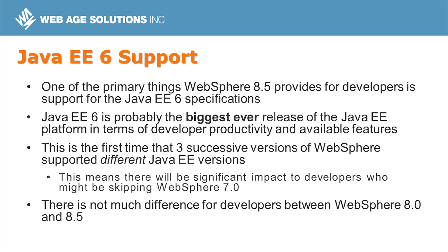This is the first time that three successive versions of WebSphere have supported different Java EE versions. WebSphere 6.1 supported J2EE 1.4, WebSphere 7.0 supported Java EE 5, and WebSphere 8.0 and 8.5 support Java EE 6 — which means that if you're skipping over 7.0 and going straight to 8.0 or 8.5, there are a ton of new features.